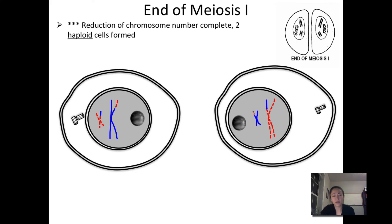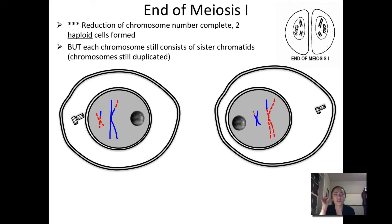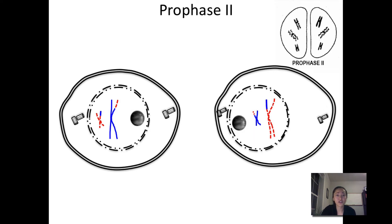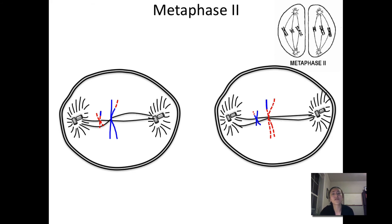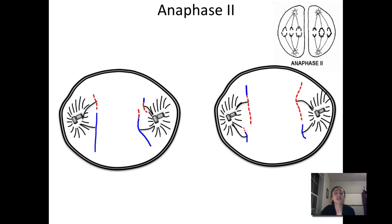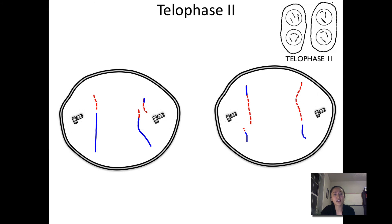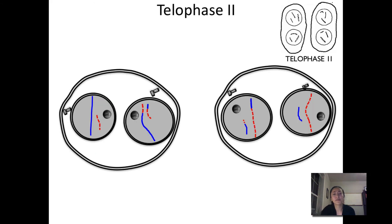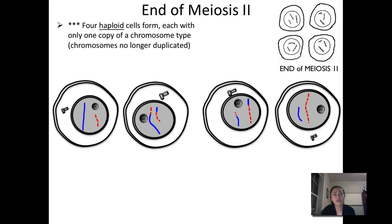However, each chromosome is still duplicated at the end of meiosis 1, so there's still too much genetic information in each cell. The whole point of meiosis 2 is to separate those sister chromatids — it looks just like mitosis, except the cells are already haploid. During prophase 2, the nuclear membrane disappears, DNA condenses, and spindle fibers form. In metaphase 2, chromosomes line up in the middle. In anaphase 2, sister chromatids are pulled apart. In telophase 2, new nuclei form and spindle fibers dissolve. Cytokinesis 2 divides the cytoplasm, leaving four haploid cells at the end.